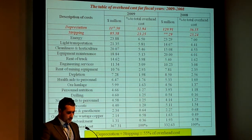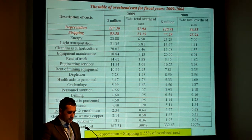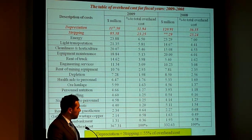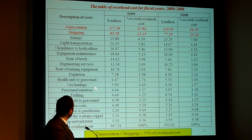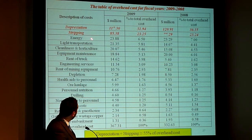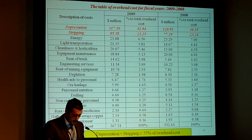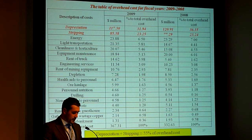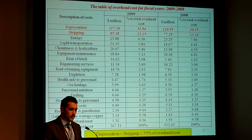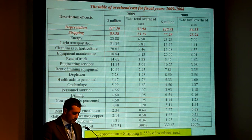Now, these are the overhead costs. We have examined most of them, but you can see that depreciation and stripping result in over 55% of the overhead costs. We may look at these costs and try to alleviate some of them in order to make the business more efficient.